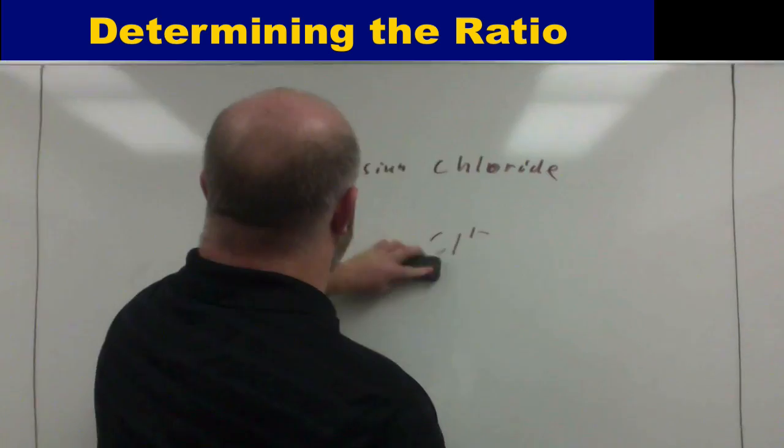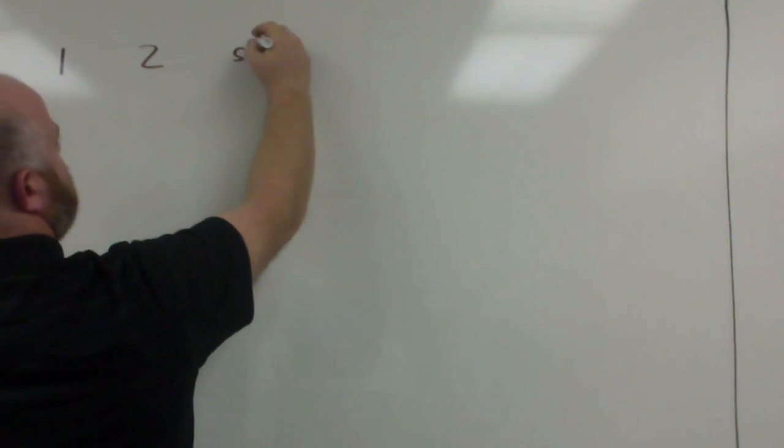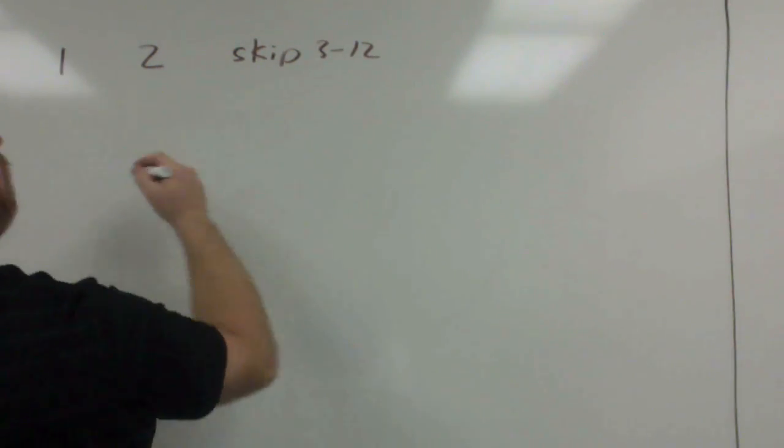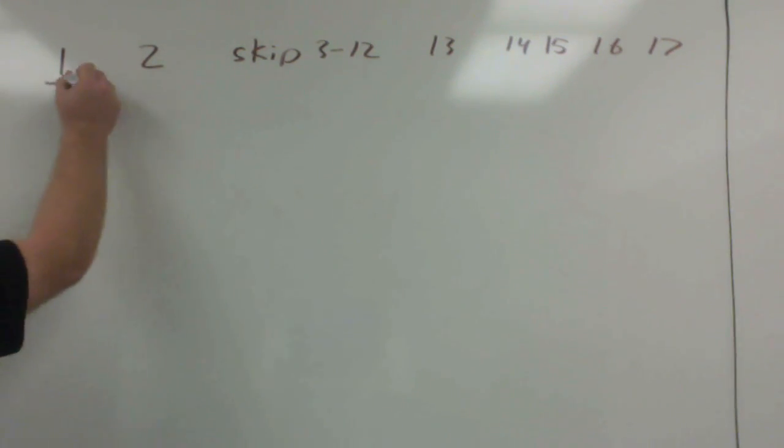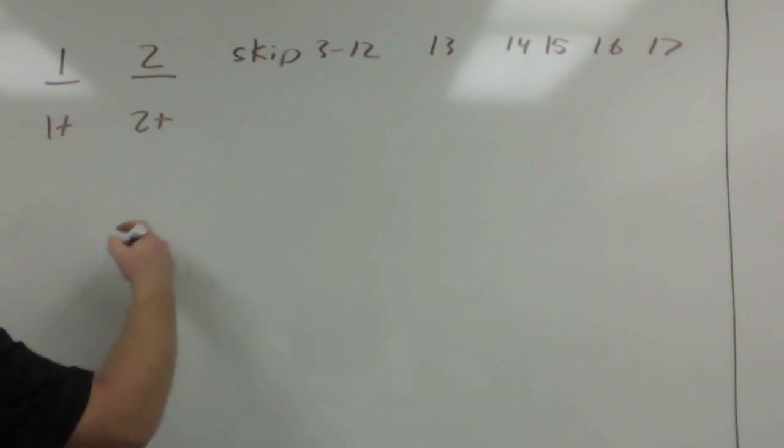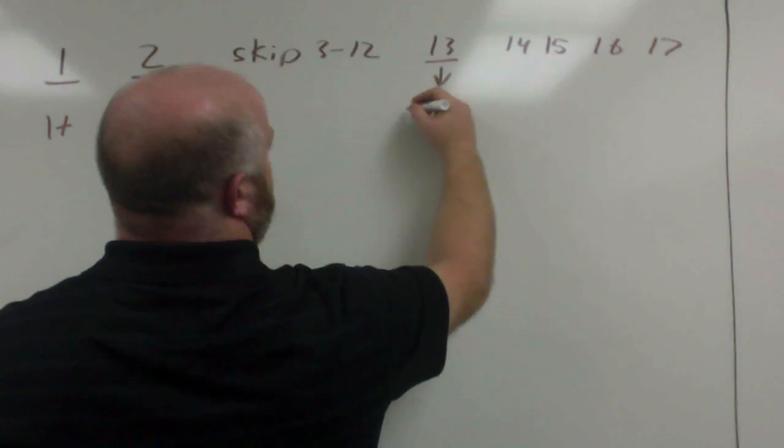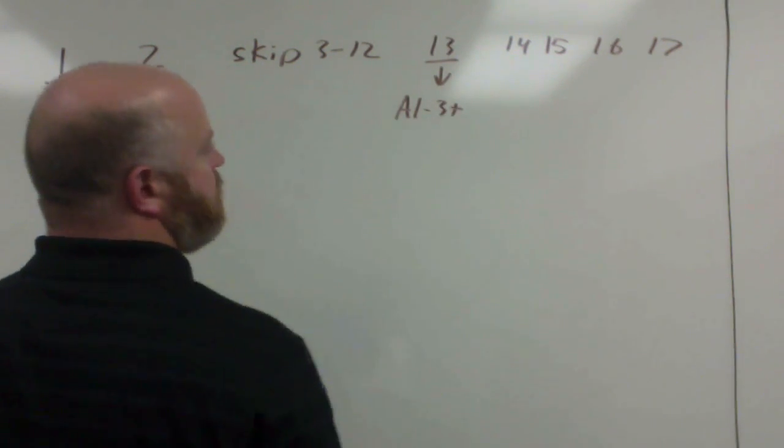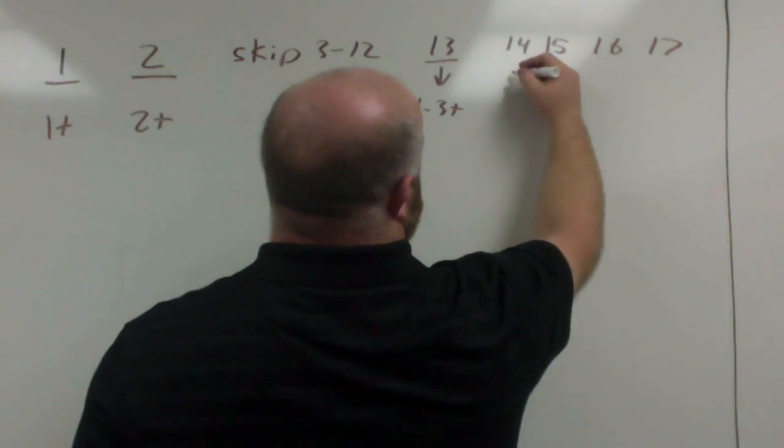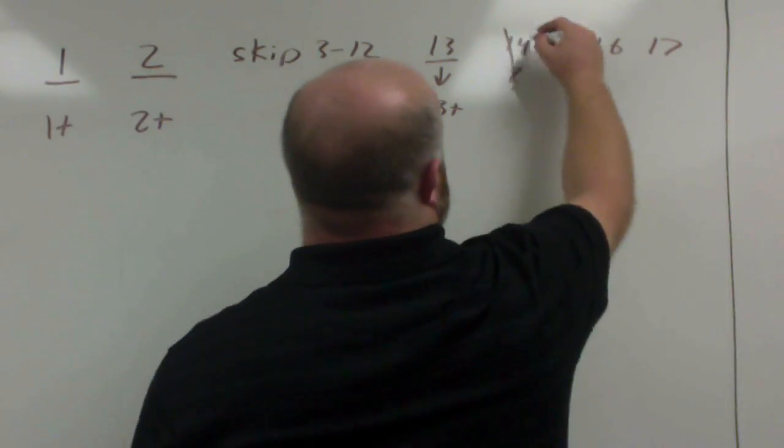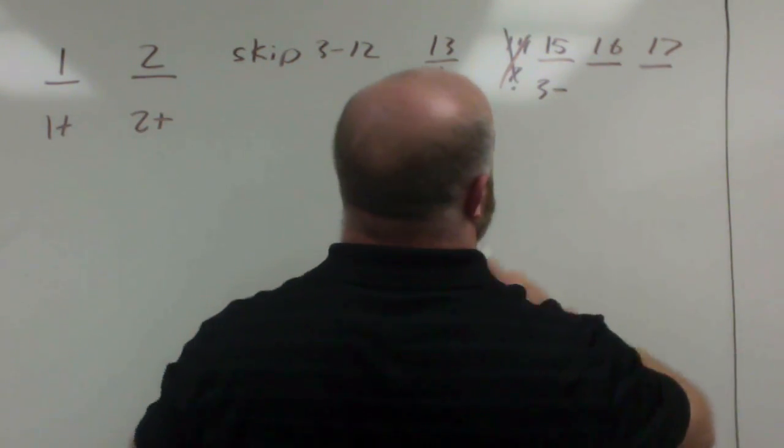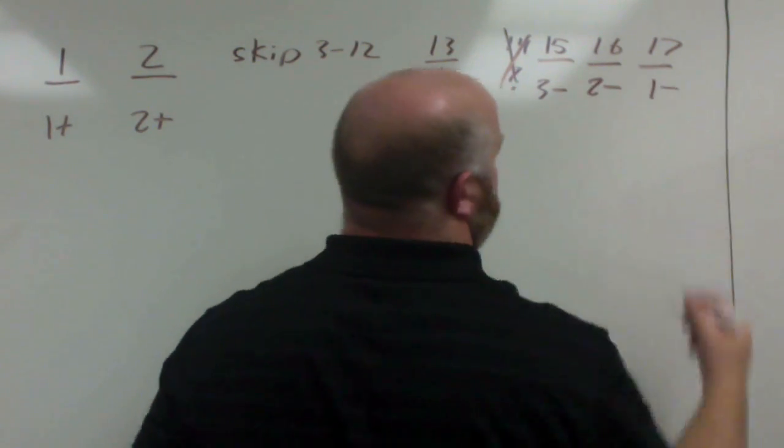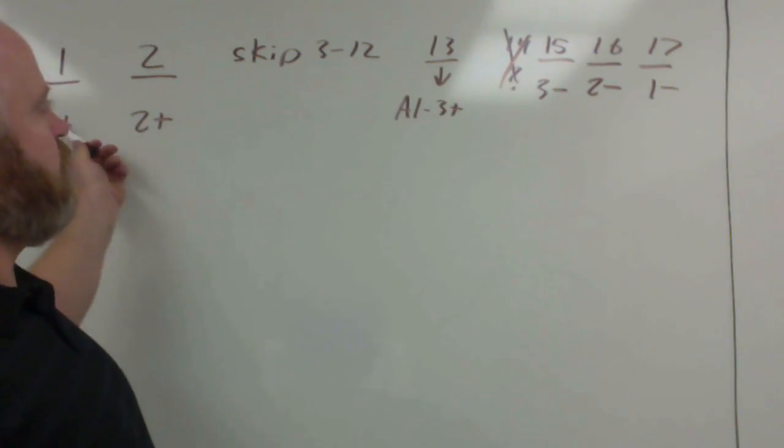For our main group elements, our main groups are groups 1 and 2, and then we skip 3 through 12, and then we get 13, 14, 15, 16, and 17. We know that our group 1 is always a 1-plus. Our group 2 is always a 2-plus. We skip these. Group 13, really the only element we know is aluminum, and that's a 3-plus. 14, we never really talked about in terms of charges, so we ignore that one. 15 is a 3-minus, 16 is a 2-minus, and 17 is a 1-minus. These are the standardized charges that we set up in previous units.